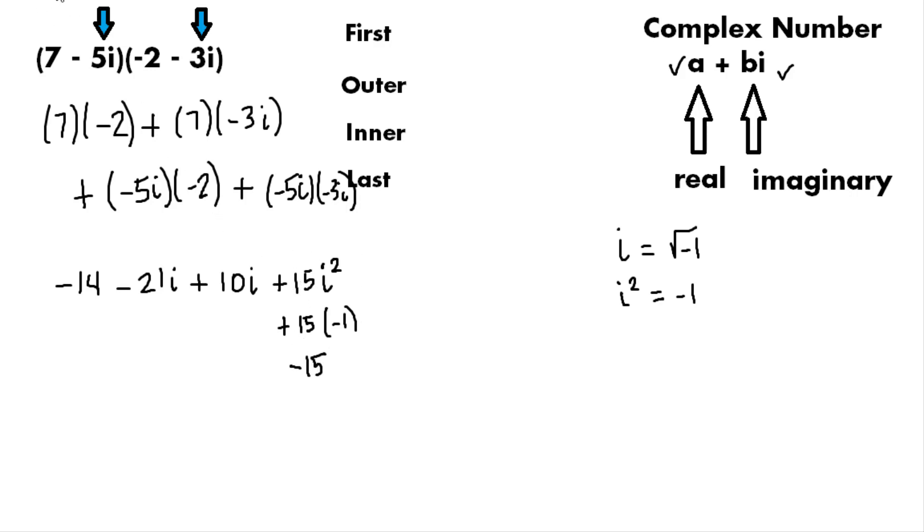Now we can combine our real parts and our imaginary parts. So we have real parts here and here. So negative 14 and negative 15 is negative 29. And then our imaginary parts are these two pieces here. Negative 21i plus 10i gives us negative 11i.